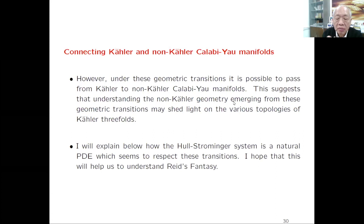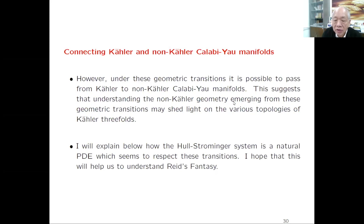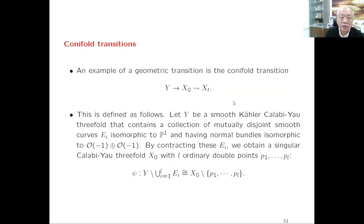We try to pass from a Kähler Calabi-Yau manifold to a non-Kähler Calabi-Yau manifold—when moving between Kähler Calabi-Yau manifolds with different topologies, we must go through some non-Kähler one in between, because we try to kill some Kähler classes in the process. The construction goes as follows: take a smooth Kähler Calabi-Yau manifold Y containing a collection of mutually disjoint smooth rational curves E_i ≅ P^1 whose normal bundle is isomorphic to O(-1) ⊕ O(-1). By contracting these rational curves to points, we get a new manifold X_0 with L ordinary double points.